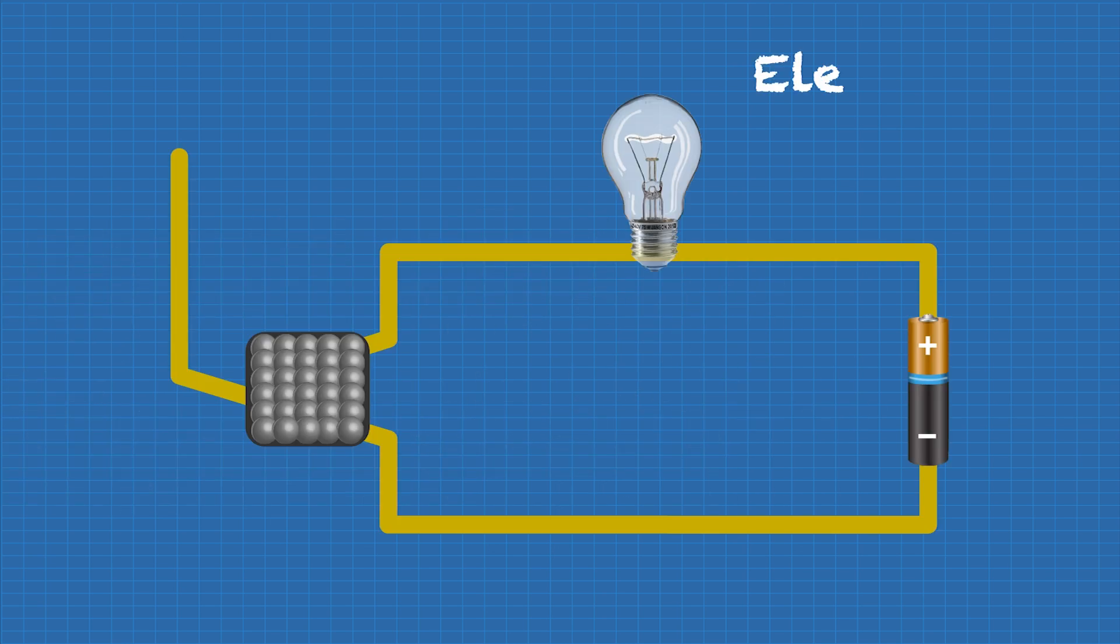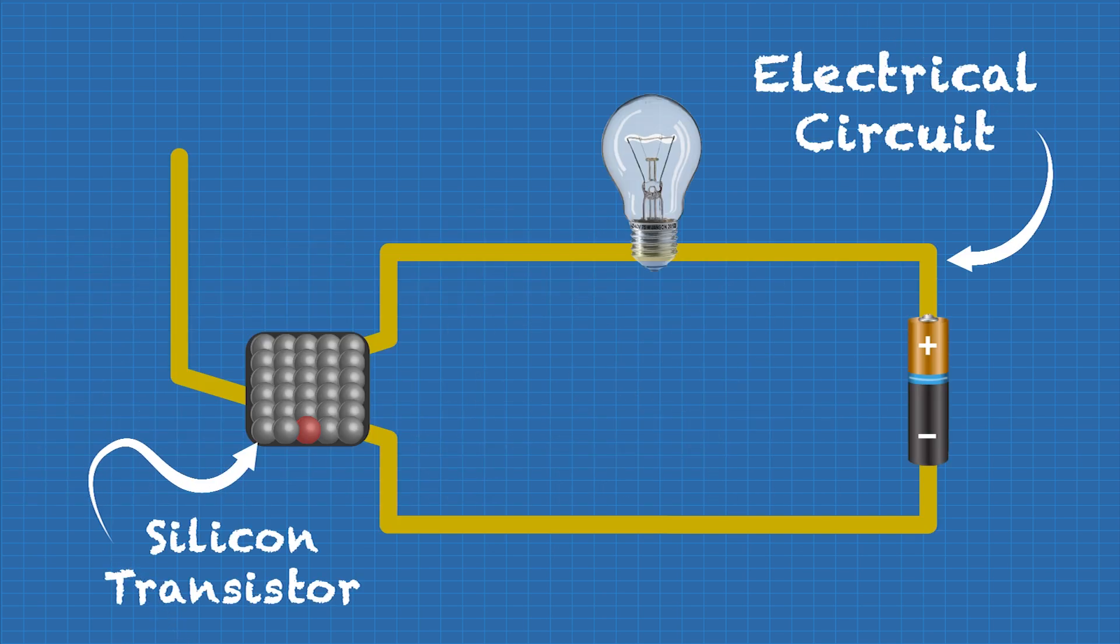So why silicon? Well, it all comes back to that semiconductor thing. If you have silicon with a few impurity atoms added and give it a little bit of electrical energy, it conducts. Without electrical energy, it insulates. Material scientists and engineers use this property to design a switch that you can operate electrically.